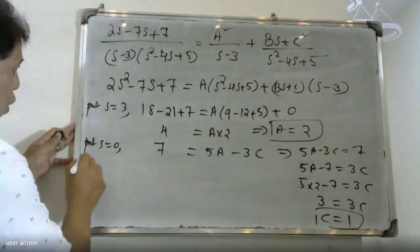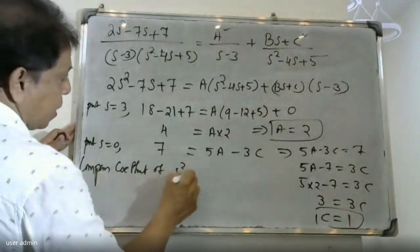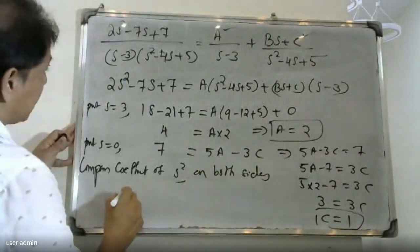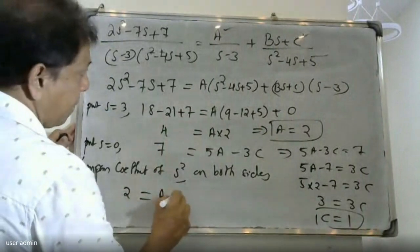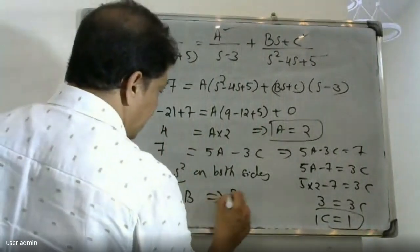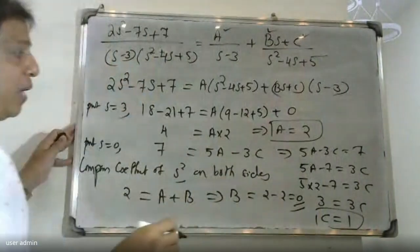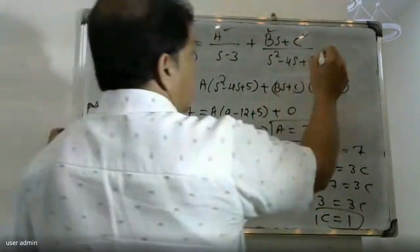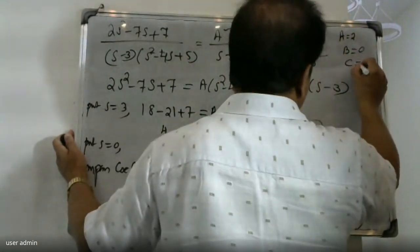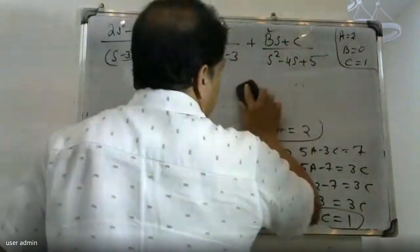Comparing coefficients of s squared on both sides confirms A equals 2. From the s coefficient equation, B plus A equals 2, so B equals 2 minus 2, which gives B equal to 0. Therefore the final partial fraction values are A equals 2, B equals 0, and C equals 1. We will now substitute these values.